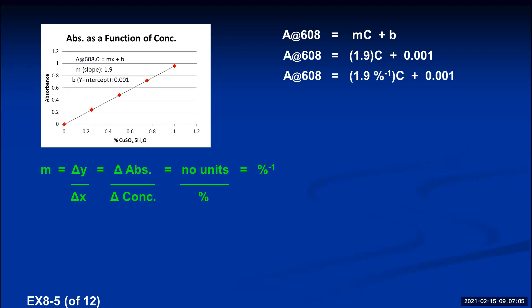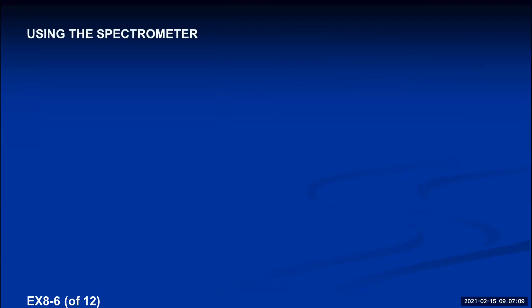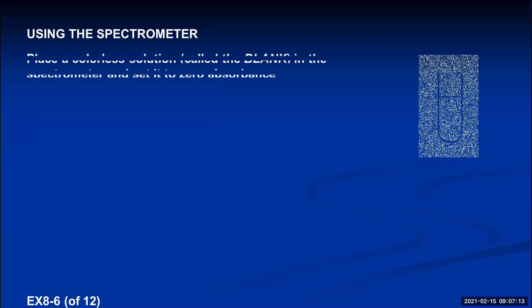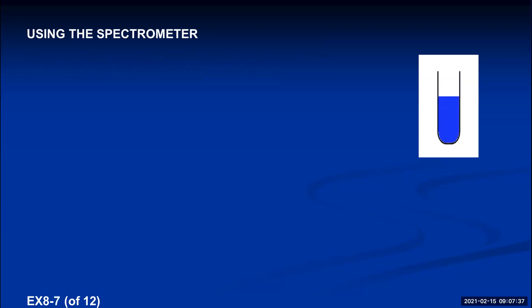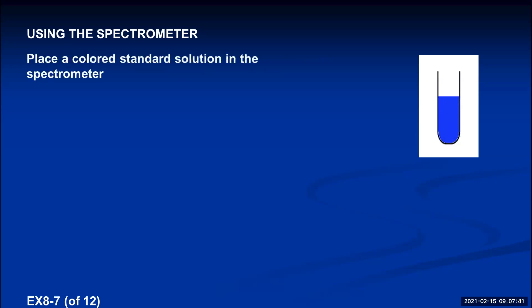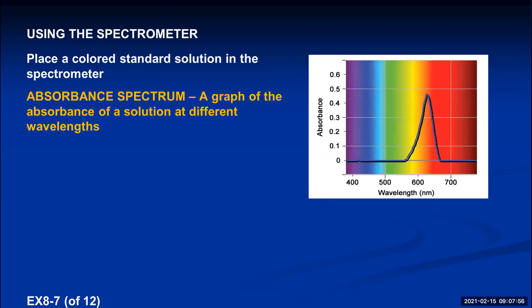Now let's talk about the experimental technique using the spectrometer. First, we set the spectrometer to zero by placing a colorless solution — called the blank — into it and setting its absorbance to zero. If the solution contains no blue color at all, we want the spectrometer to read zero. Once zeroed, we place a deeply colored standard solution into the spectrometer and shoot every wavelength of visible light through it to generate an absorbance spectrum — a graph of absorbance across all wavelengths.